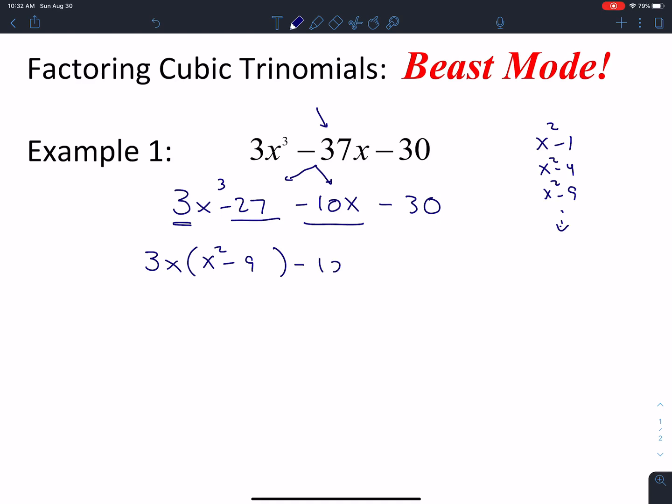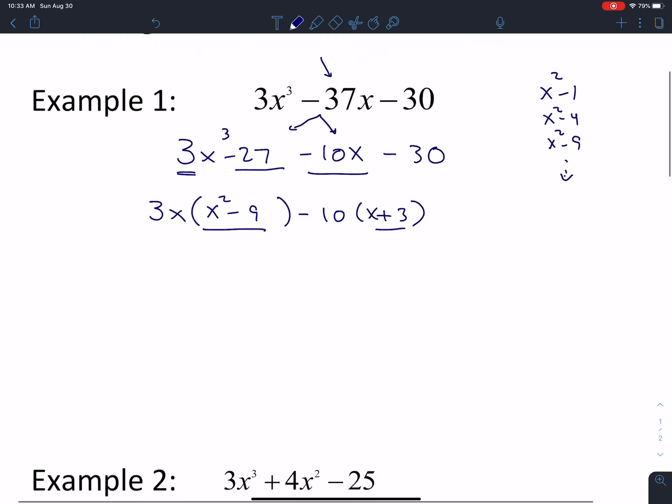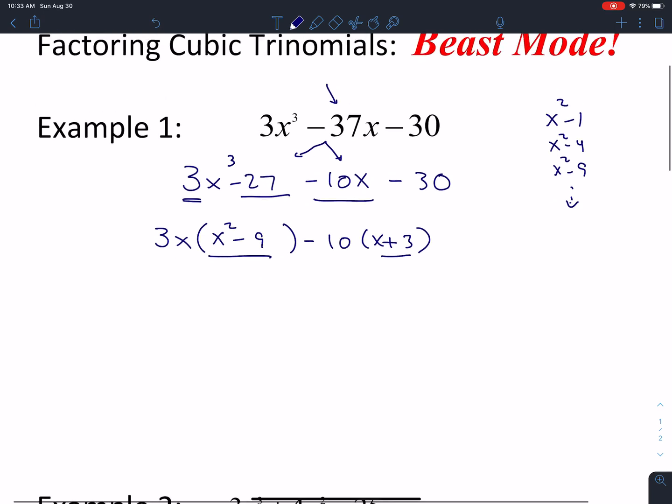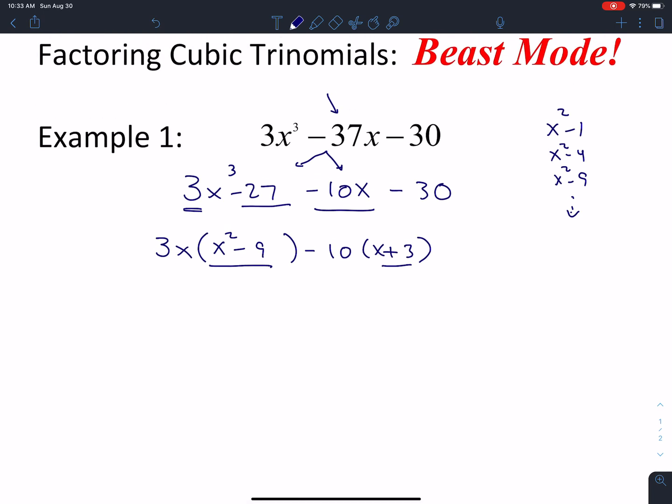So factoring out the -10 gives me an x + 3. And all you have to do is make sure that the x + 3 is one of the factors in your difference of squares on the other side. So that one wasn't too bad because we just anticipated that with the 3. So let's finish this problem out.